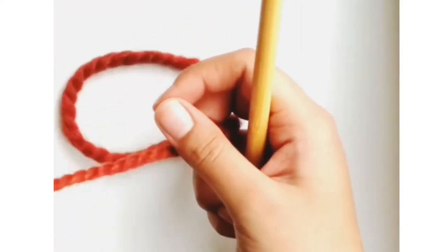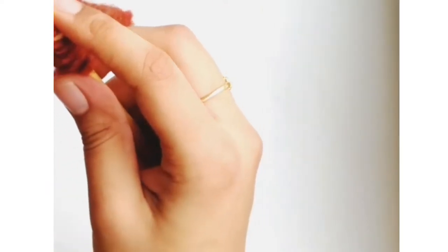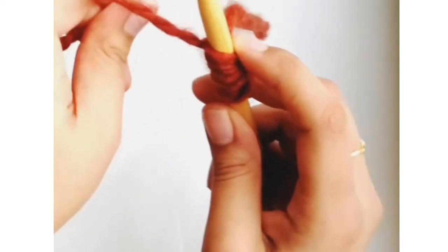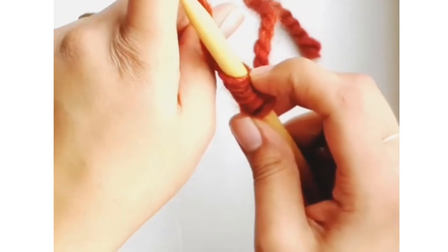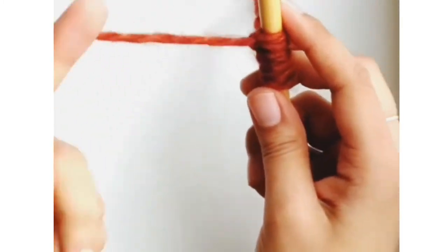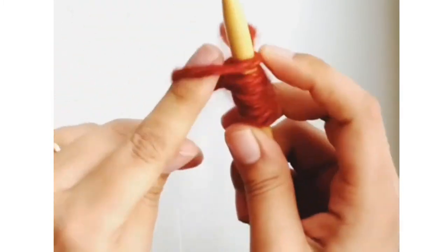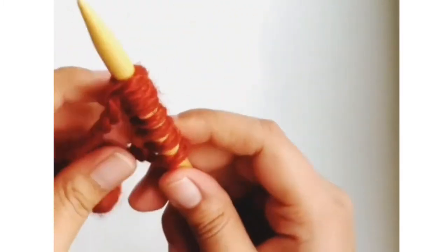So in order to cast on, basically you're holding the yarn down with your thumb and middle finger, and you're looping it around your forefinger like this, and then just doing that. So that's how you do cast on.